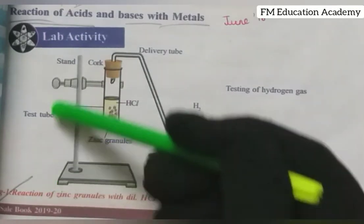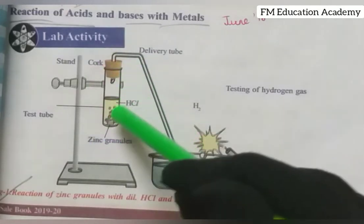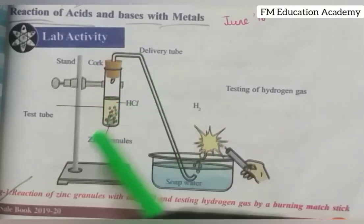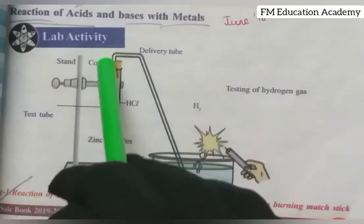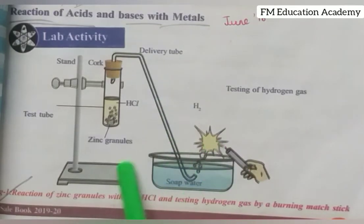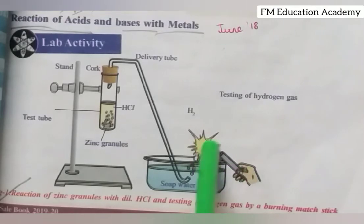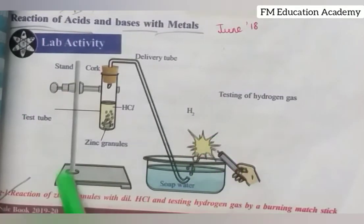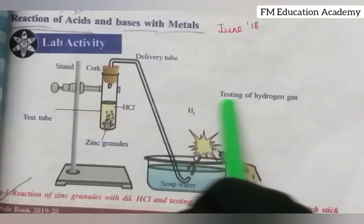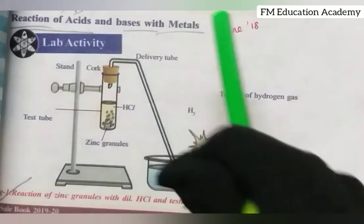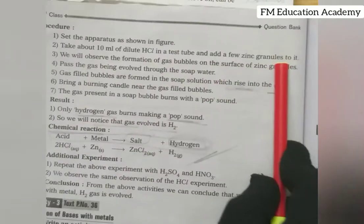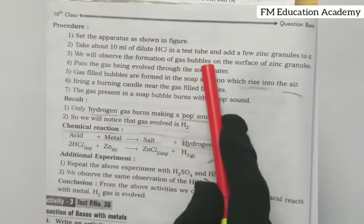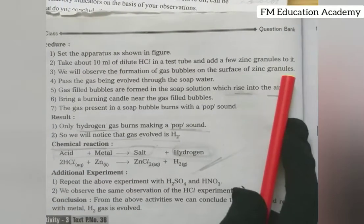Now for the setup: we attach the test tube to the holder on the stand. Inside the test tube we put about 10 ml of dilute HCl and add a few zinc granules. We cover the test tube with a cork, make a hole in the cork, and connect the delivery tube through it. The delivery tube passes through the soap water in the glass trough. Initially, do not bring the candle close.